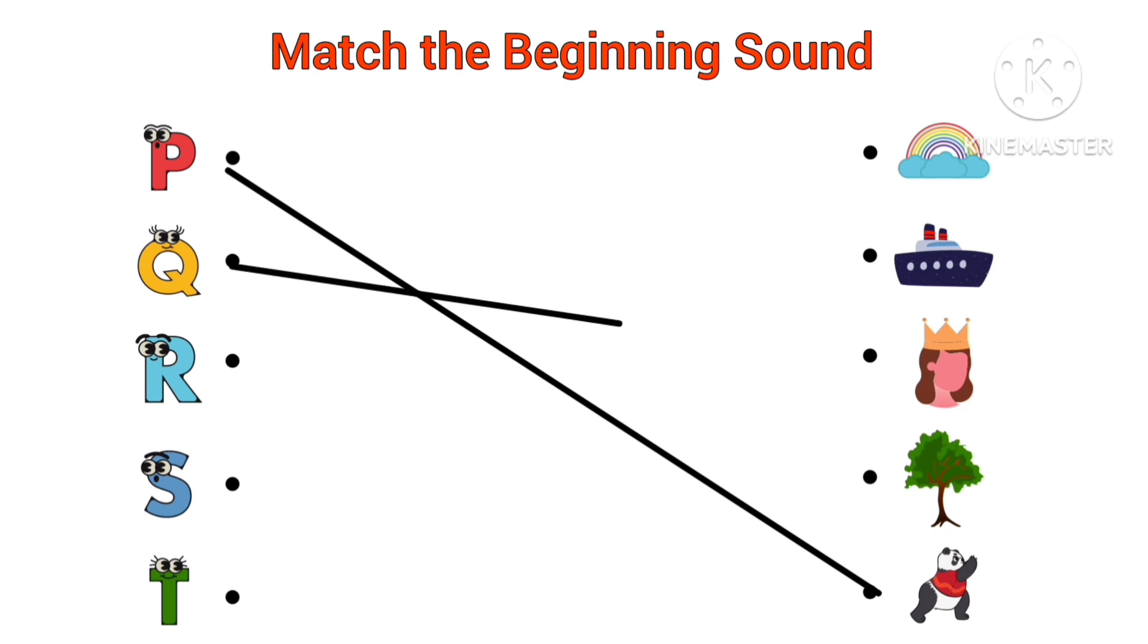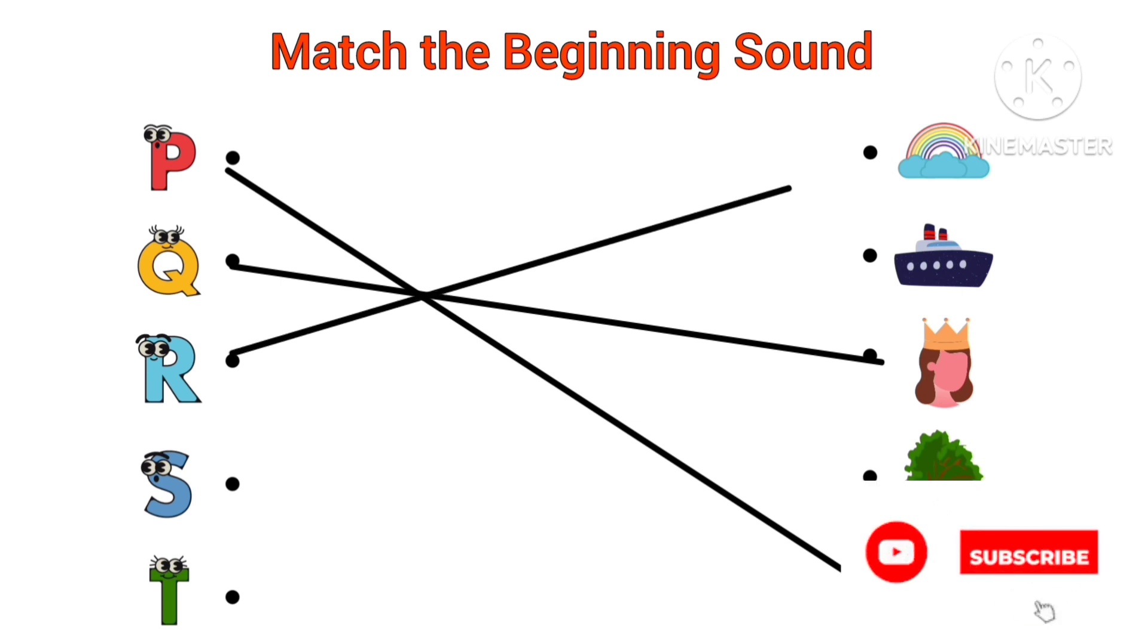Q, Q for queen. Beginning sound of queen is Q. R, R for rainbow. Beginning sound of rainbow is R.